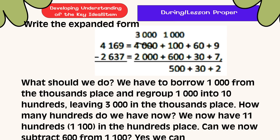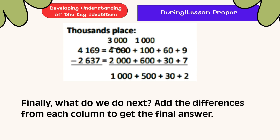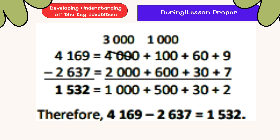What should we do? We have to borrow 1,000 from the thousands place and regroup 1,000 into 10 hundreds, leaving 3,000 in the thousands place. How many hundreds do we have now? We have 11 hundreds, or 1,100 in the hundreds place. Can we now subtract 600 from 1,100? Yes, we can. Finally, we subtract the thousands place: 3,000 minus 2,000 equals 1,000. Add the differences from each column to get the final answer. Therefore, 4,169 minus 2,637 has a difference of 1,532.